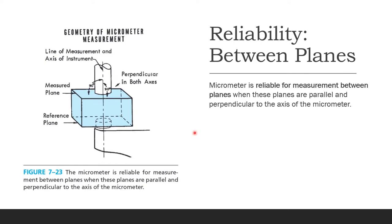The micrometer is reliable for measurement between planes, but only when those planes are parallel and perpendicular to the axis of the micrometer. Looking at the geometry, you need 90 degrees in both axes. Here you see the measure plane and the reference plane with the spindle and anvil — the part goes between them — and reliability requires the planes to be both parallel and perpendicular to the micrometer's axis.